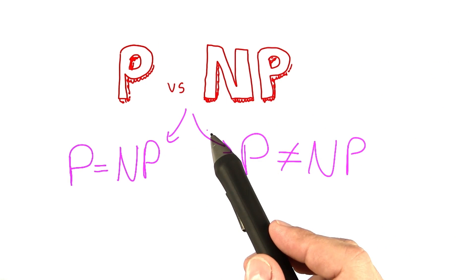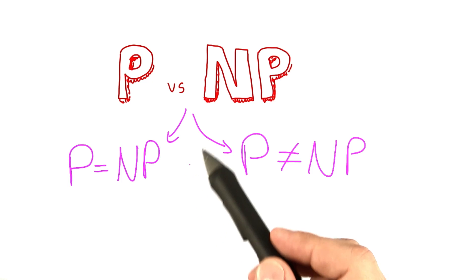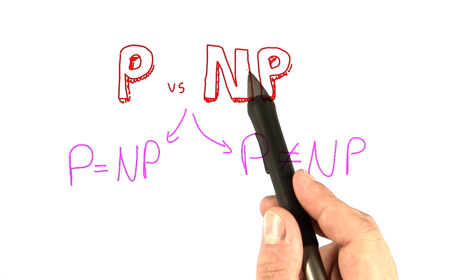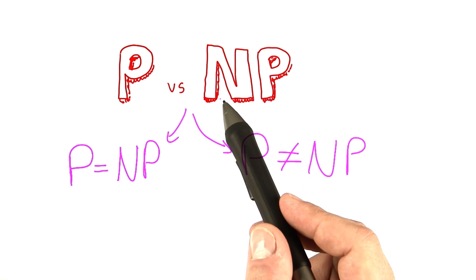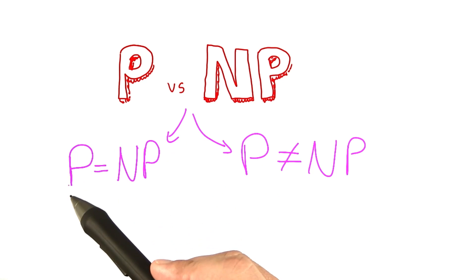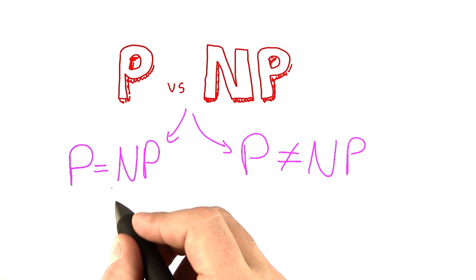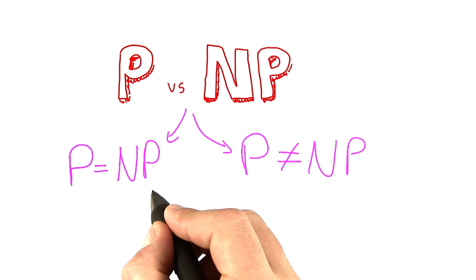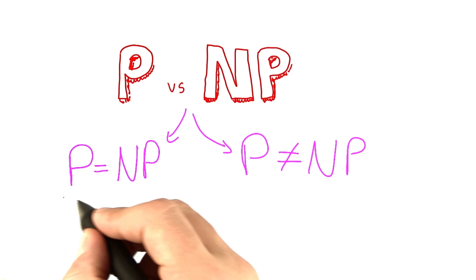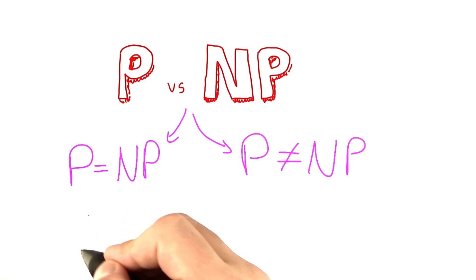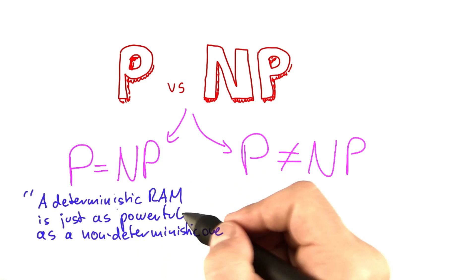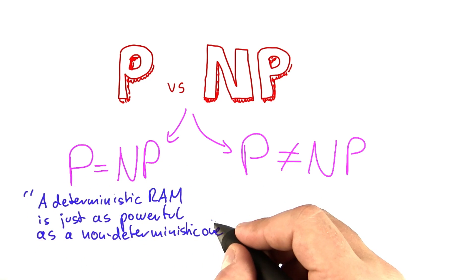The cool thing is there's only two possibilities. Either all NP-complete problems can be solved in polynomial time, which would essentially mean that P equals NP—any problem that can be solved in polynomial time on a non-deterministic RAM can be solved in polynomial time on a deterministic RAM. In other words, a deterministic RAM is just as powerful as a non-deterministic one.